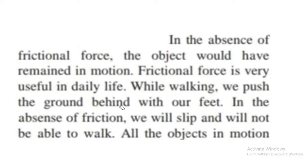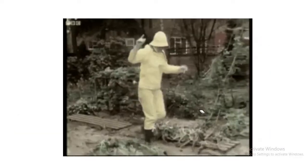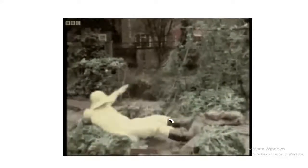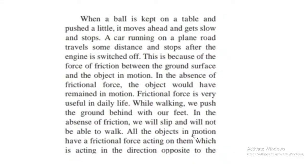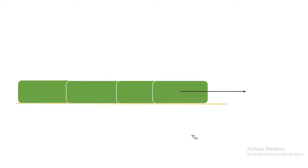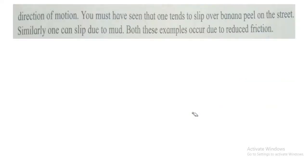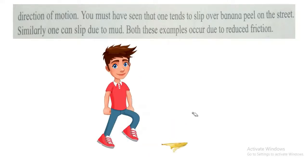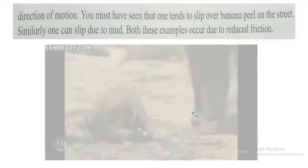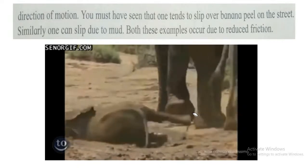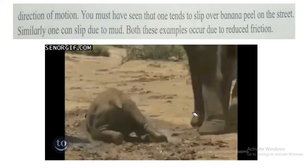In short, we push the ground behind with our feet. In the absence of friction, we will slip and will not be able to walk. All objects in motion have a frictional force acting on them which is acting in the direction opposite to the direction of motion. You must have seen that one tends to slip over banana peel on the street. Similarly, one can slip due to mud. Both these examples occur due to reduced friction.